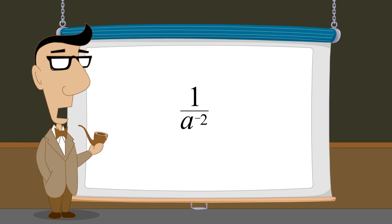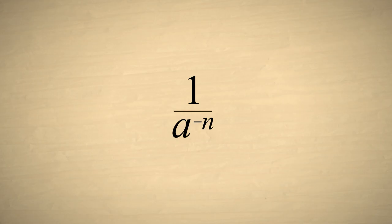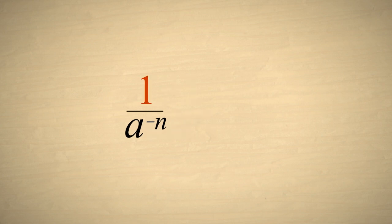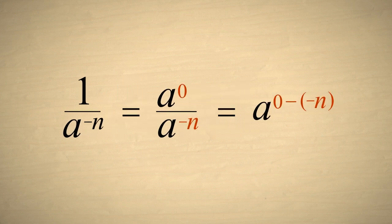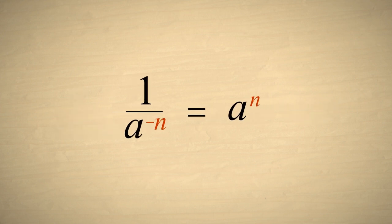Occasionally, you may encounter an exponential expression with a negative exponent in the denominator. Instead of a specific exponent, let's use n to represent any exponent. We can eliminate the negative exponent by moving the term to the numerator and switching the sign of the exponent. To see why this works, instead of one in the numerator, let's write a to the zero power, which is the same thing as one. Now we can subtract the exponents, and we get an exponent of positive n. So one over a to the negative n is equal to a to the positive n.